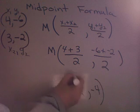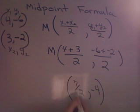So, the ordered pair of the midpoint is 7 halves, negative 4.